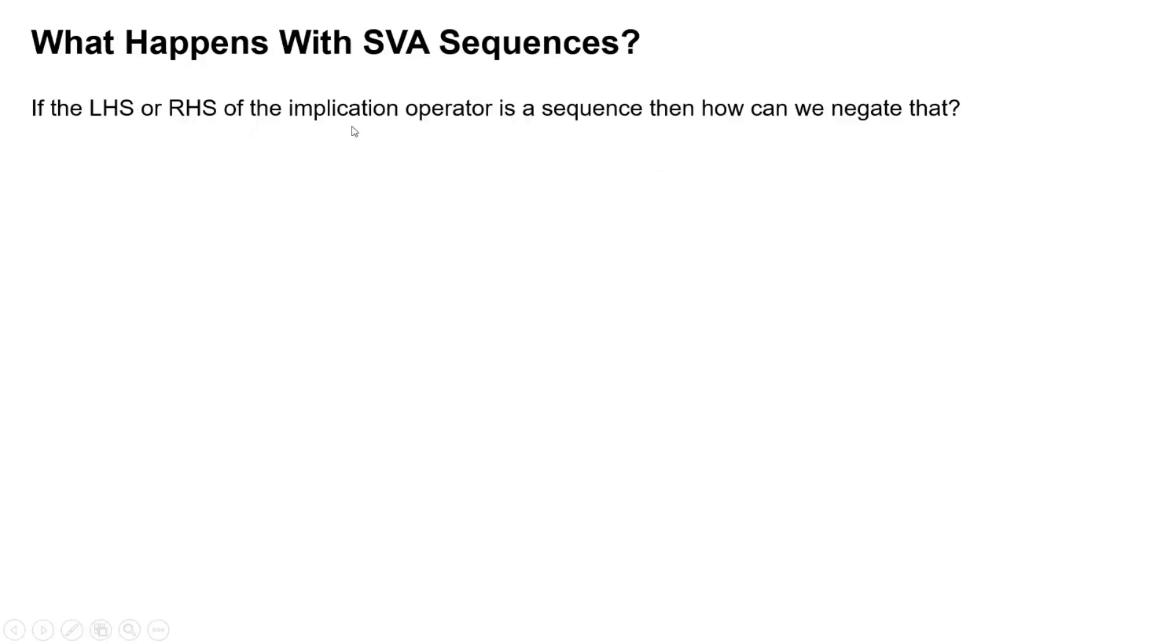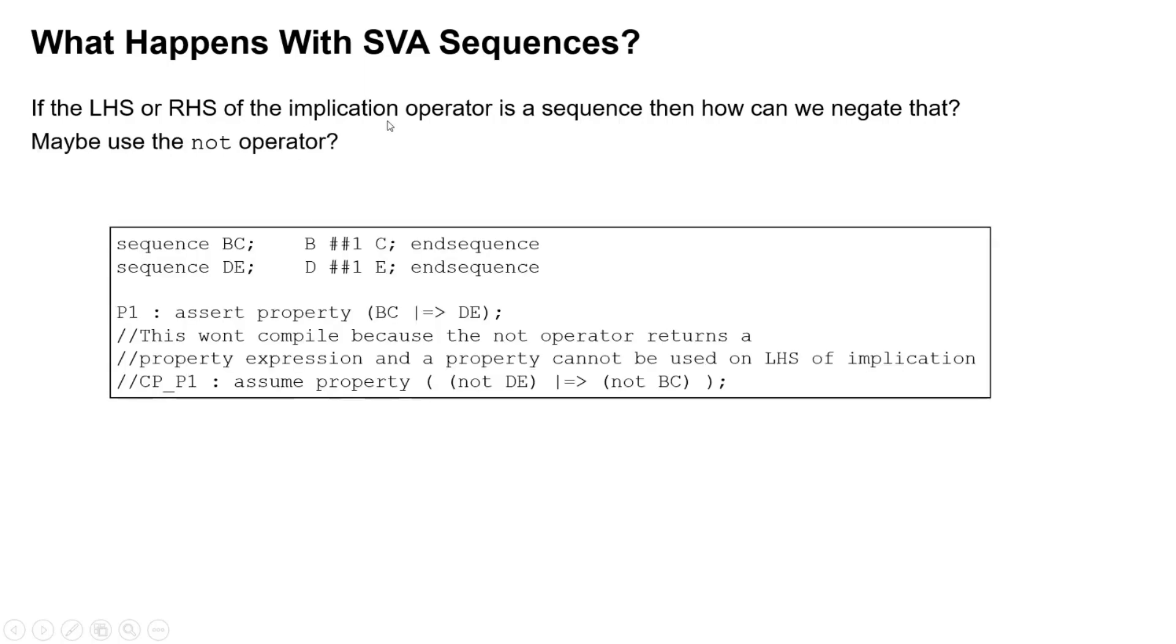If however you've got sequences, what happens then if the left or right is a sequence, does that still hold? So what I've got defined here is named sequences B, C and D, E. And we write an assertion that says that BC sequence implies that next cycle I get a DE sequence. So if I try and do that trick for creating a contraposition here, what I'd need to do is swap each side of the operator and invert them both. So there is an operator NOT, which is a negation operator.